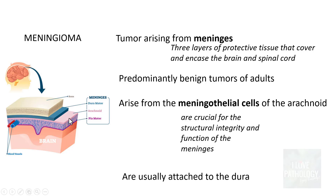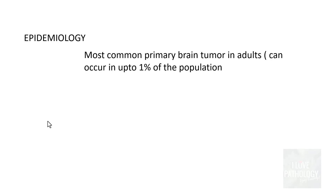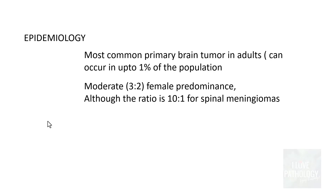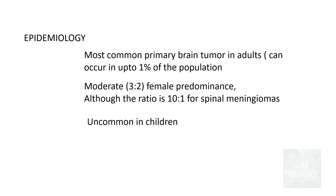Although Meningioma arises from the arachnoid, these tumours are usually attached to the overlying dura. Regarding epidemiology, Meningioma is the most common primary brain tumour in adults, occurring in up to 1% of the population. It occurs more commonly in females compared to males in a ratio of 3 to 2, and is an extremely rare occurrence in children.